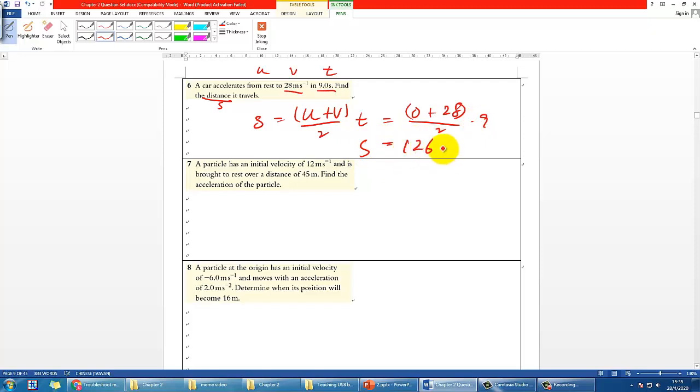Next question, you have u brought to rest, v is rest 0, over the distance s, find the acceleration a. Should be v square equal to u square plus 2as. So v is 0, u is 12 square, a is the unknown, s is 45. The answer you find should be negative 1.6 meter per second square.